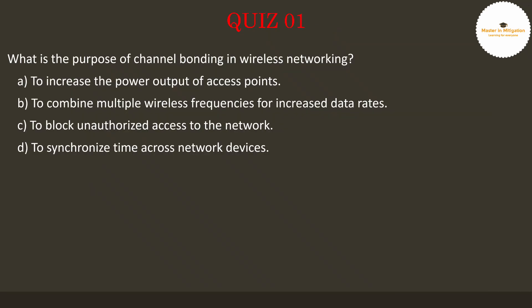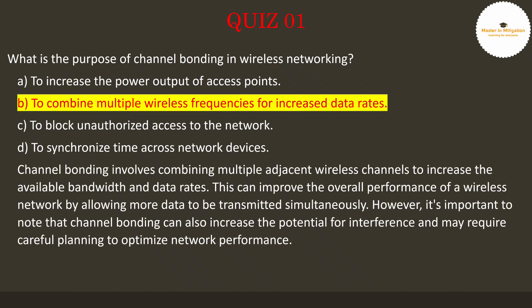Let's go to question 1. What is the purpose of channel bonding in wireless networking? Pause the video now to select the best answer. The answer is B: to combine multiple wireless frequencies for increased data rates. Channel bonding involves combining multiple adjacent wireless channels to increase the available bandwidth and data rates. This can improve the overall performance of a wireless network by allowing more data to be transmitted simultaneously. However, channel bonding can also increase the potential for interference and may require careful planning to optimize network performance.